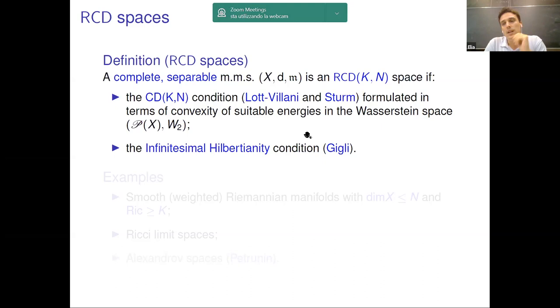And the second condition aims at ruling out any Finslerian structure. The problem is the CD(K,N) condition alone allows for Finslerian structures. For instance, the Euclidean space of dimension D endowed with any norm turns out to be a CD(0,D) space. Adding this infinitesimal Hilbertianity, we are excluding any norm which is not induced by the scalar product. Coupling these two conditions, we have this class of RCD spaces. R in the definition stands for Riemannian, since they are Riemannian-like spaces with a curvature dimension condition.